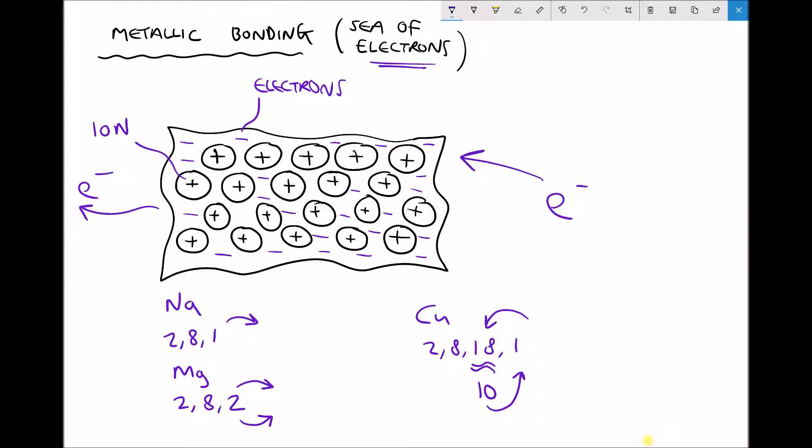Something like copper has the potential to form a very dense sea of electrons, and this is why copper is such a good conductor of electricity.